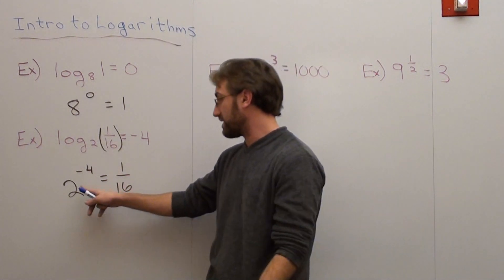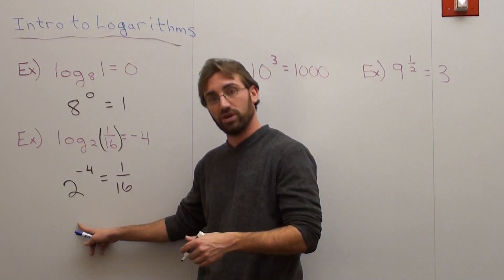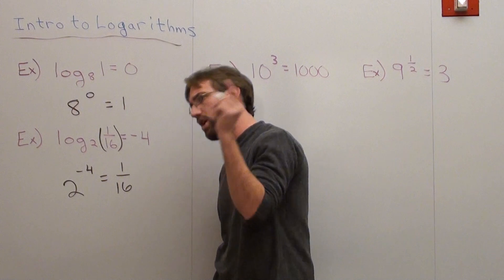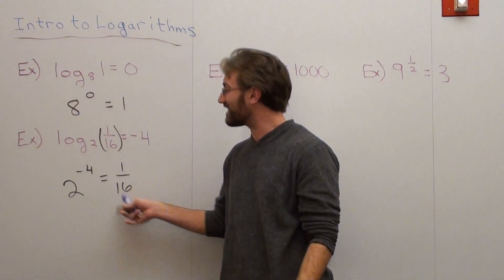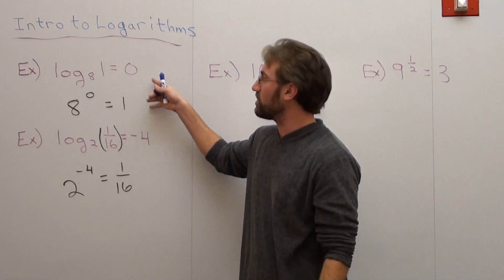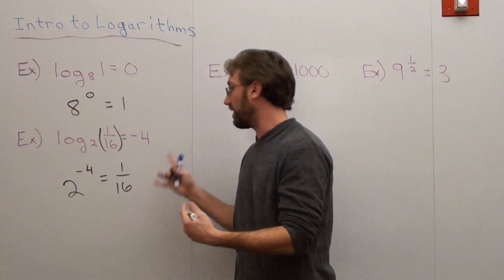That, in fact, is true. This is the same thing as 1 over 2 to the 4th, because the exponent's negative, go downstairs. 2 to the 4th is 16, so it's 1 over 16. But basically what you did was you took it from logarithmic form and you put it to exponential.